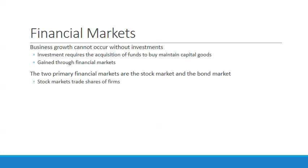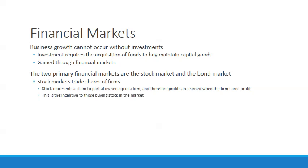The stock market trades shares of firms. Stock represents a claim to partial ownership — a percentage of a company. The greater the percentage you own, the greater the profits earned when the firm earns profits. Corporations use the sale of stock to raise money for capital goods — people buy stock, corporations get money, and when profits are made, shareholders receive a percentage. This is called equity financing.